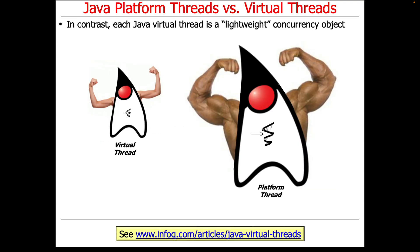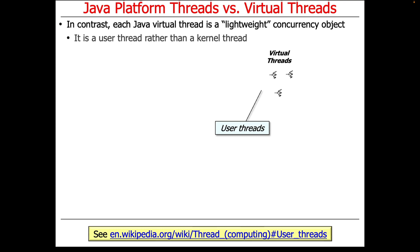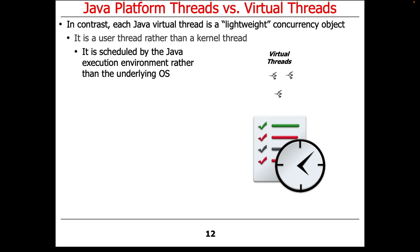In contrast, Java virtual threads are lightweight concurrency objects. If a platform thread has all the muscles, capabilities, and resources, a Java virtual thread is a much more slimmed-down version. In particular, it's a user thread rather than a kernel thread, which means it's running in so-called user space as opposed to the kernel, meaning far fewer resources are allocated on its behalf when you create one. Moreover, a virtual thread is scheduled by the Java execution environment — the Java Virtual Machine or the Android runtime — rather than the underlying operating system kernel.